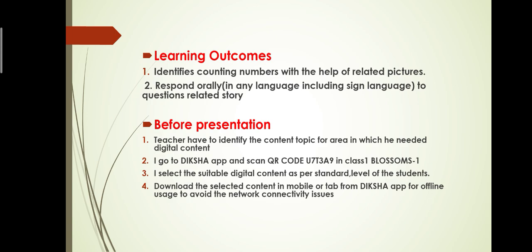Before going to the topic, there is the before presentation stage. The teacher identifies the content topic for the area in which digital content is needed. Go to the Diksha app and scan QR Code U7T389 in Class 1 Blossom 1, select suitable digital content as per the standard level of the students, and download the selected content on mobile or tablet from the Diksha app for offline use to avoid network connectivity issues.